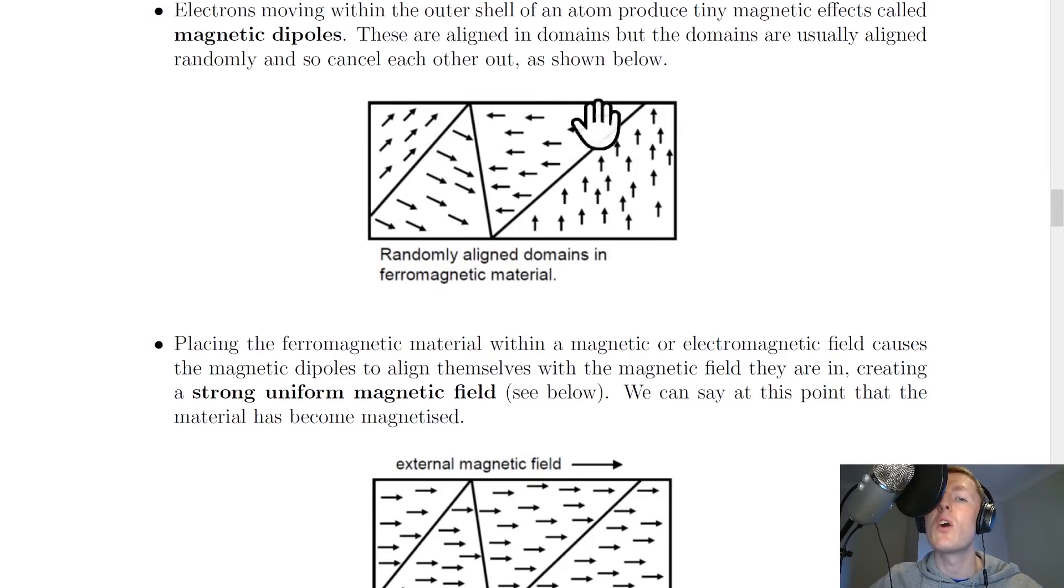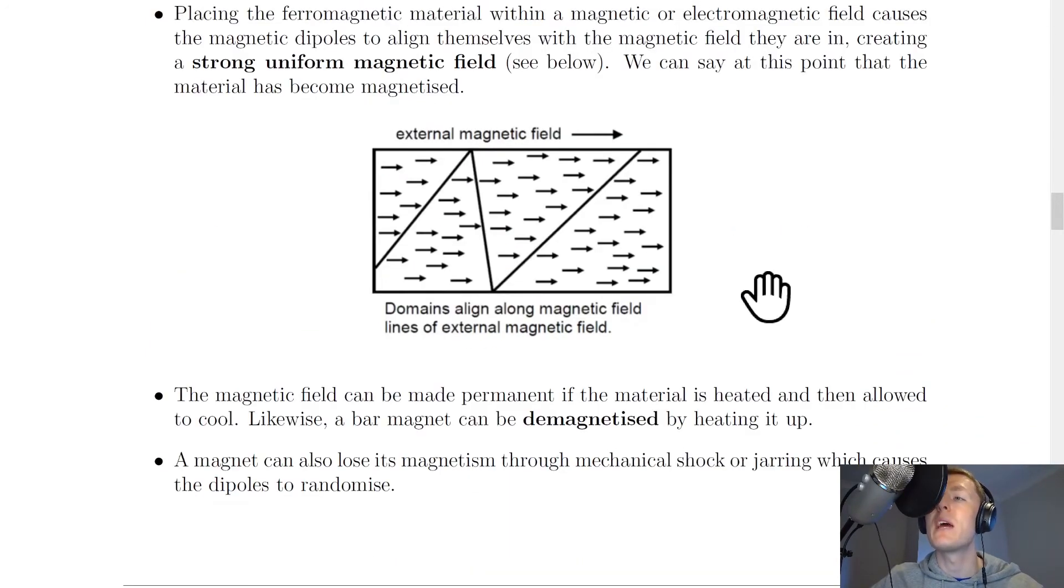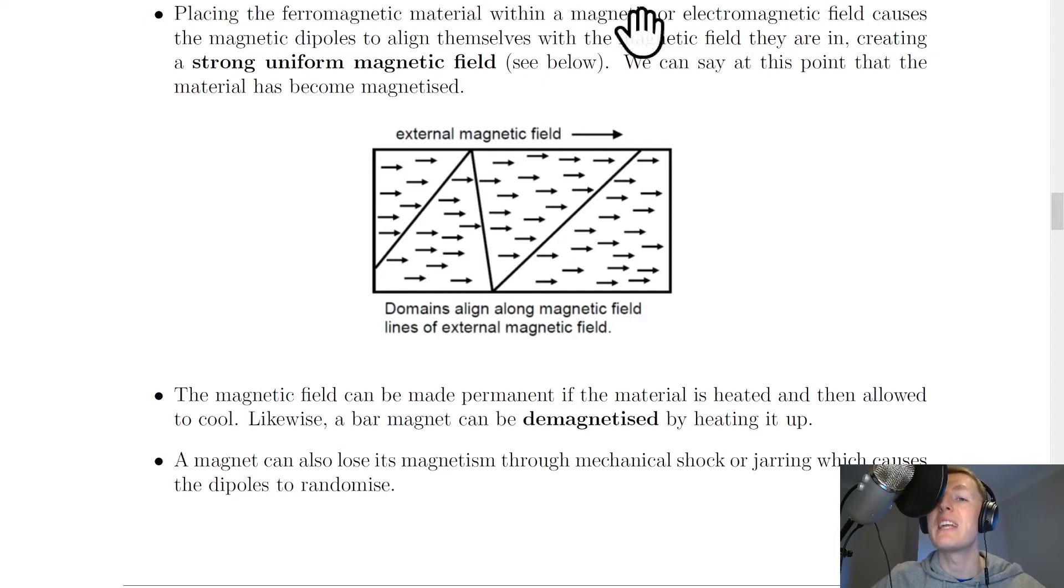So when the domains are all randomly aligned the material is not magnetised, but then when we expose the material to a magnetic or electromagnetic field this causes the dipoles to align with the direction of the field lines. So if the external magnetic field points to the right then the domains will align along the magnetic field lines of the external magnetic field also to the right.